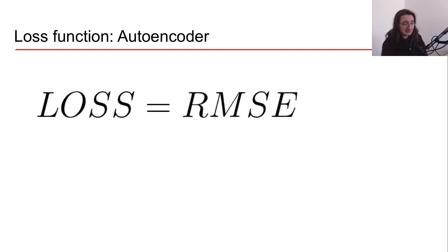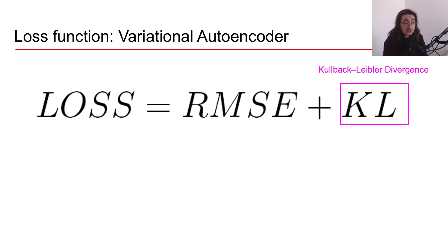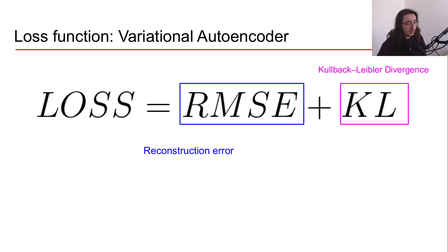The loss function for an autoencoder only has this reconstruction error, or RMSE. Now if we want to move from autoencoder to variational autoencoder in terms of the loss function, we need to add an extra term called the Kullback-Leibler divergence, or KL.